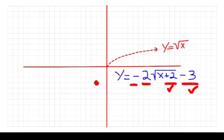So I normally would go over 1 up 1. I'm going to go over 1 and down, not 1, but twice as far, 2.